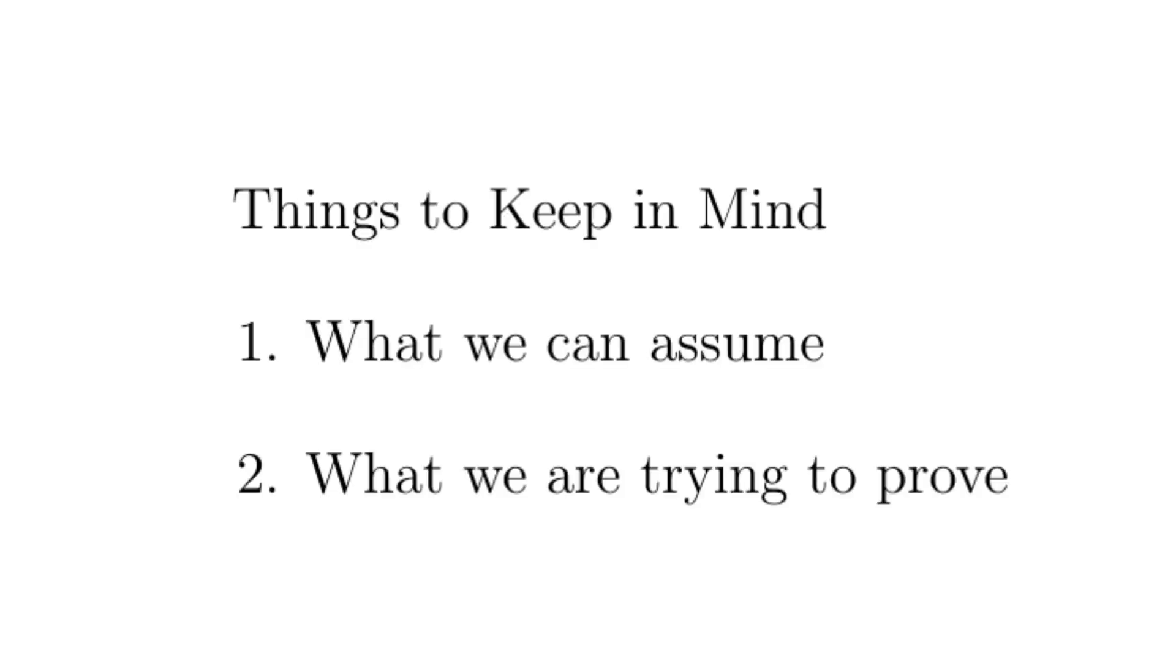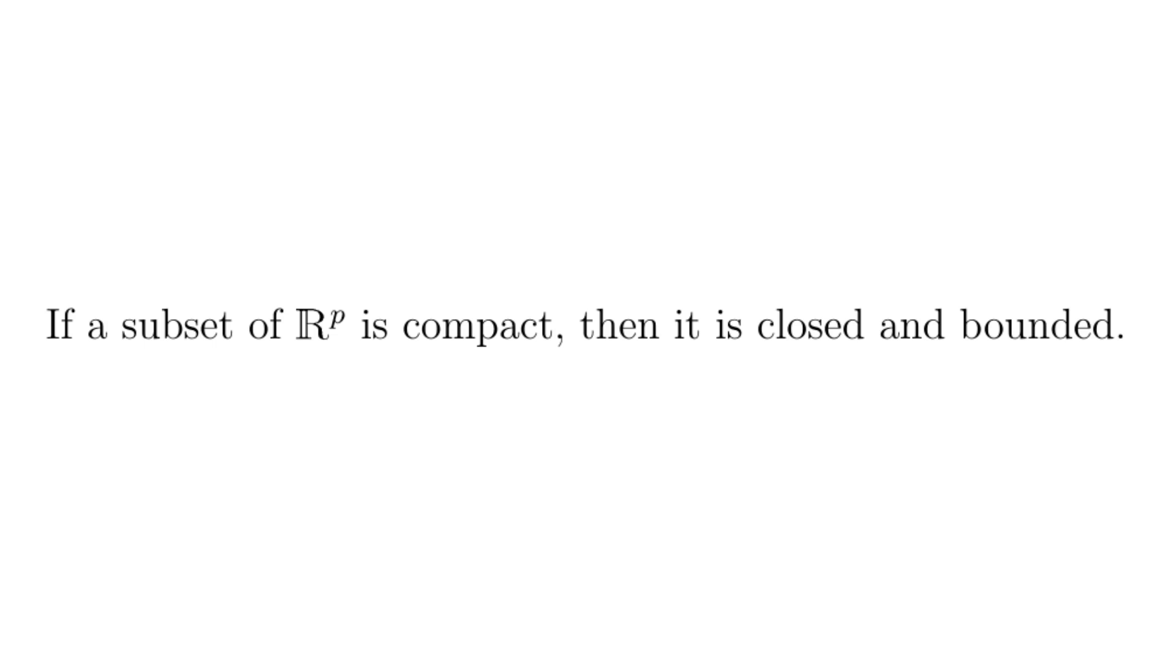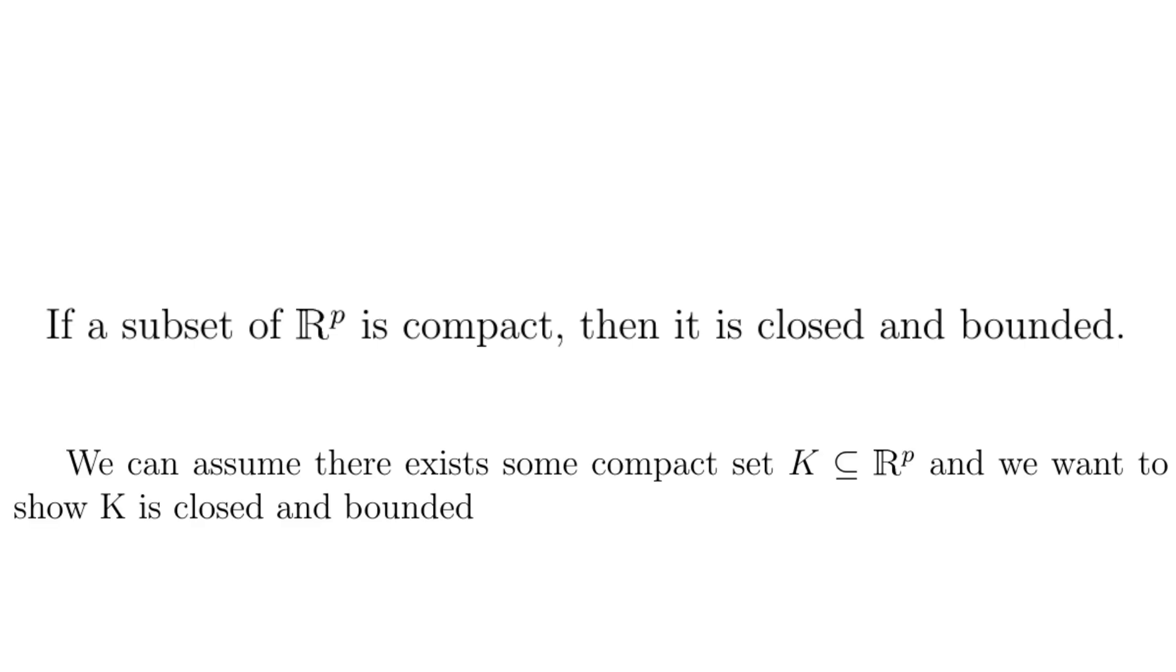Now we can move on to the proof. A good idea with proving things is knowing what we can assume and what we're trying to prove. We want to prove the statement if a subset of R^p is compact, then it is closed and bounded. So we can assume we have some subset of R^p that is compact, call it K, and we want to show that it's both closed and bounded.